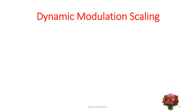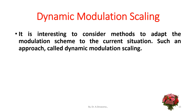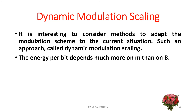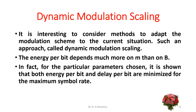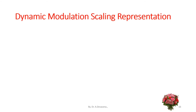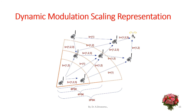The next design consideration is dynamic modulation scaling — methods to adapt the modulation scheme to the current situation. The energy per bit depends much more on M than on B. For particular parameters chosen, it is shown that both energy per bit and delay per bit are minimized for the maximum symbol rate. Dynamic modulation scaling representations include three types: 8-PSK, 4-PSK, and 2-PSK (phase shift keying).